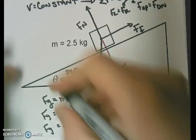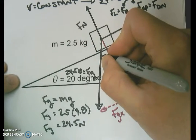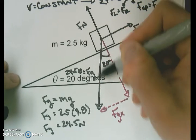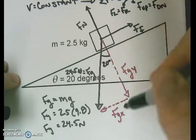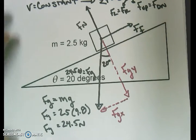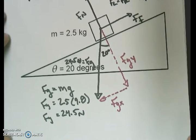That triangle that I just drew here is similar to this triangle here, meaning that if this angle is 20 degrees, so is that one. Now that I have my hypotenuse and my angle, I can find my force of gravity in the x direction and my force of gravity in the y direction.